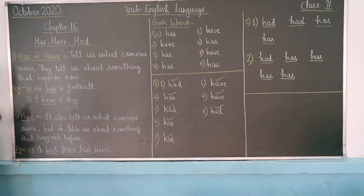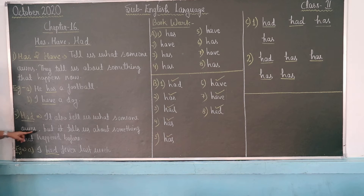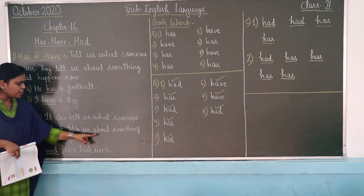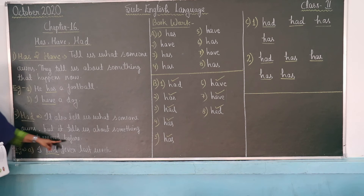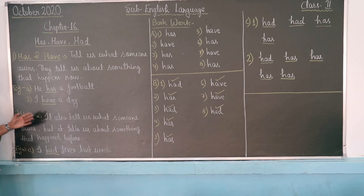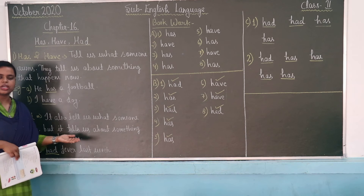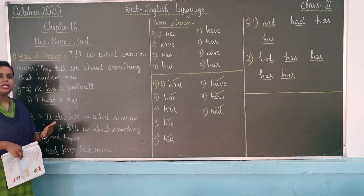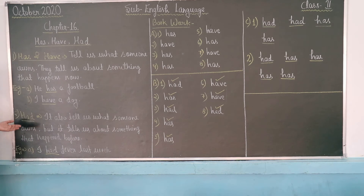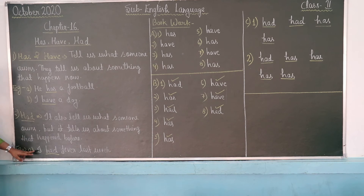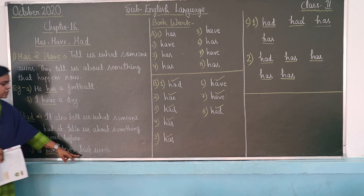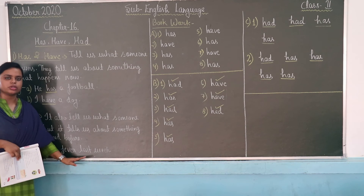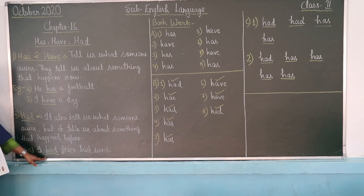Had tells us what someone owned in the past — things that have already happened before. For example: I had people last week. Last week means it already happened in the past. We use Had for things that have already occurred. So we use Had for past tense sentences.